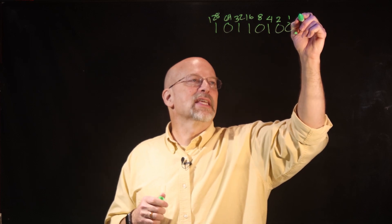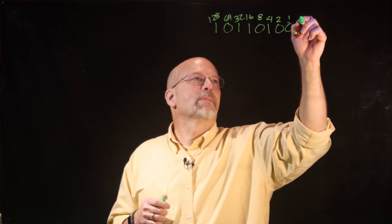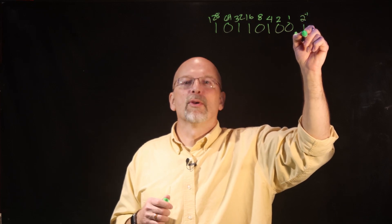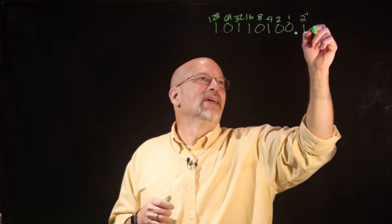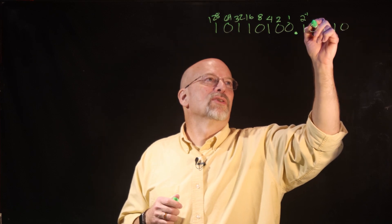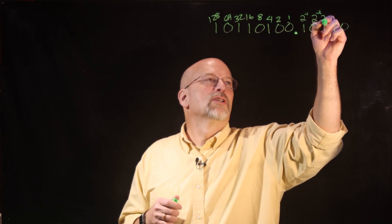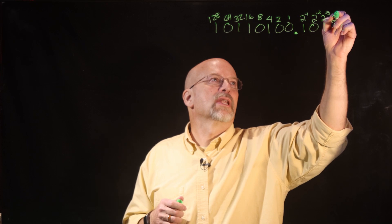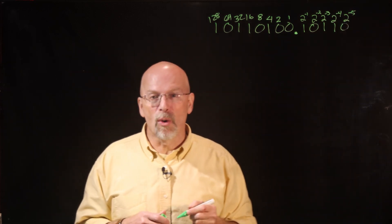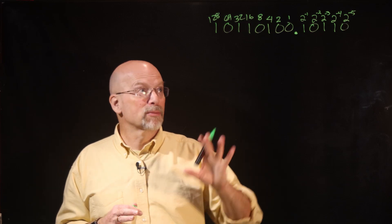The same thing happens in binary. The position to the right of the binary point is two to the negative one, then two to the negative two, two to the negative three, two to the negative four, and so on. So we can write fractional binary digits in those positions — for example, one zero one one zero after the point.